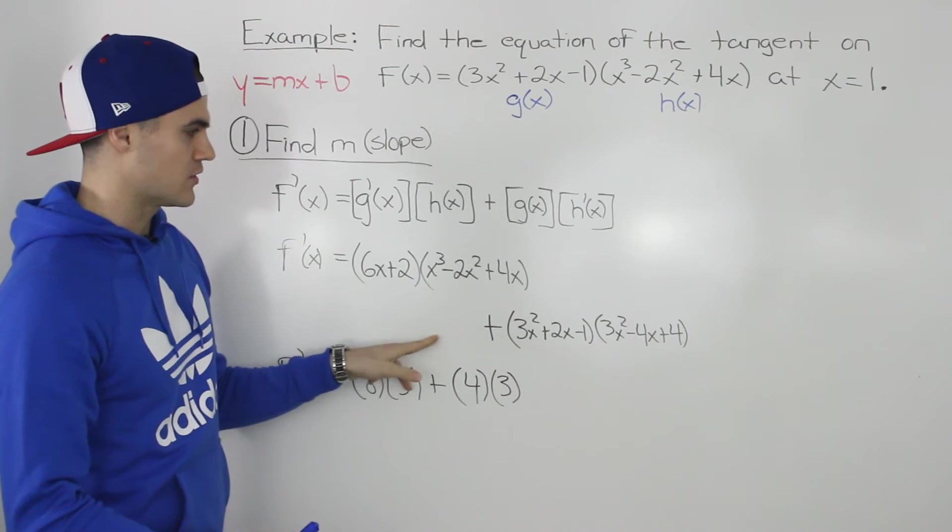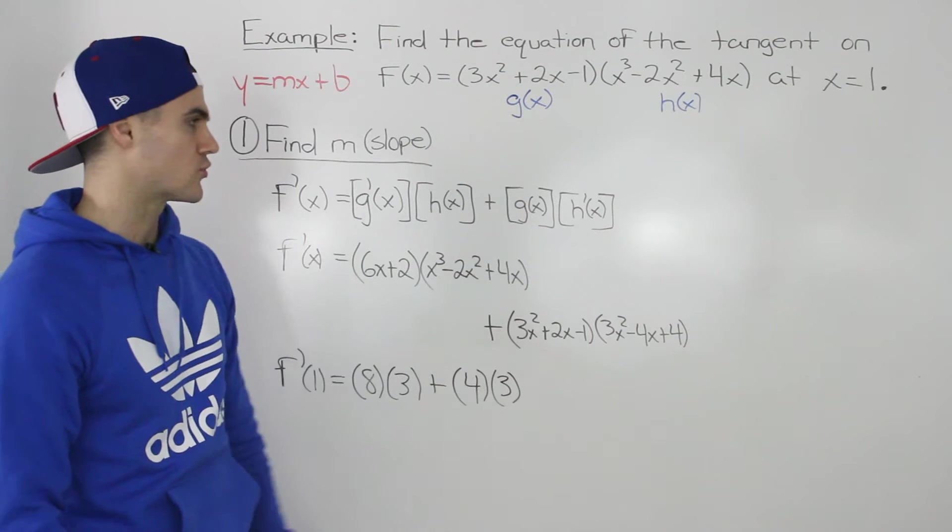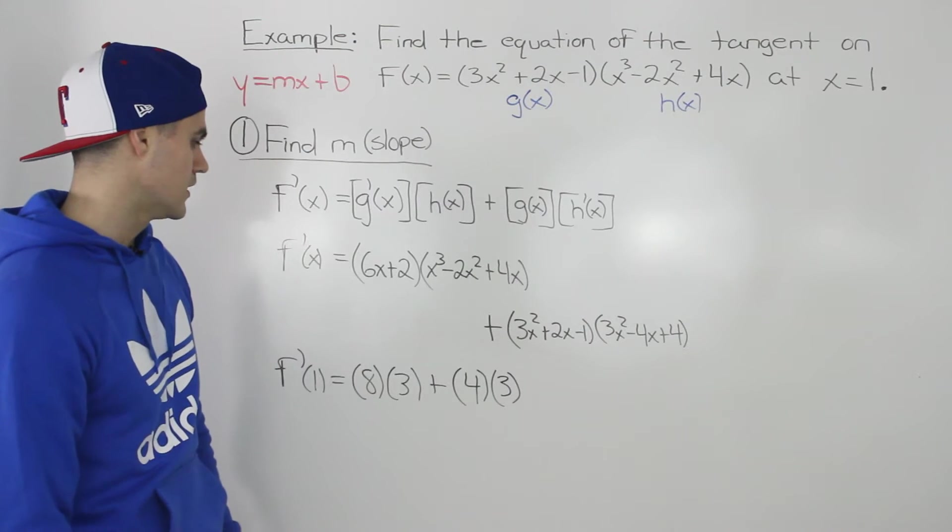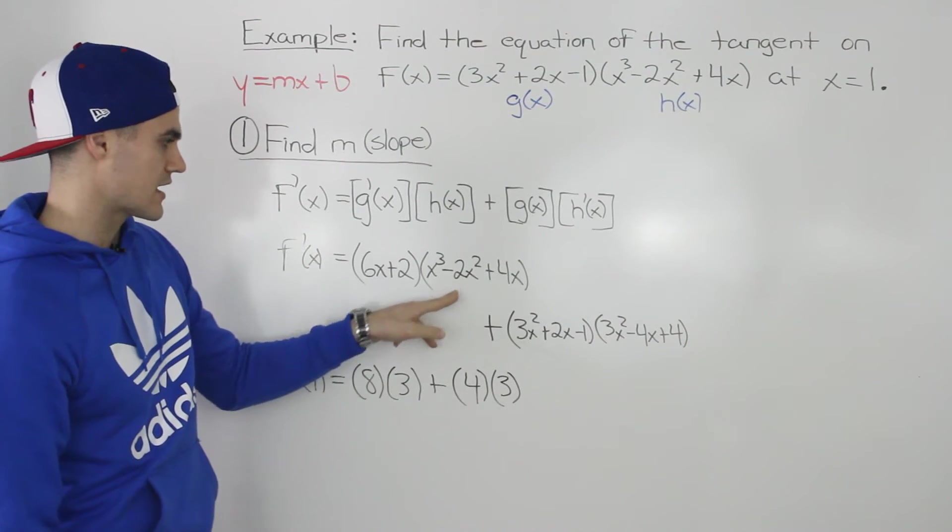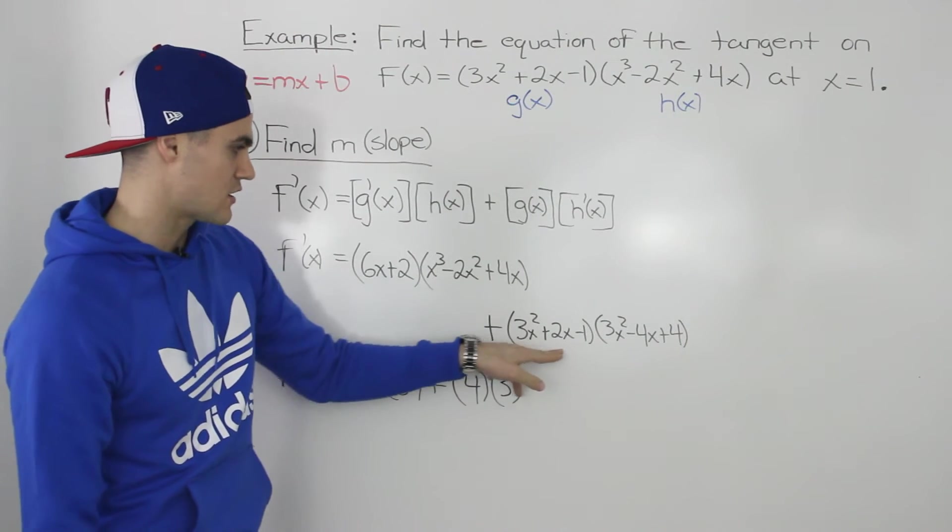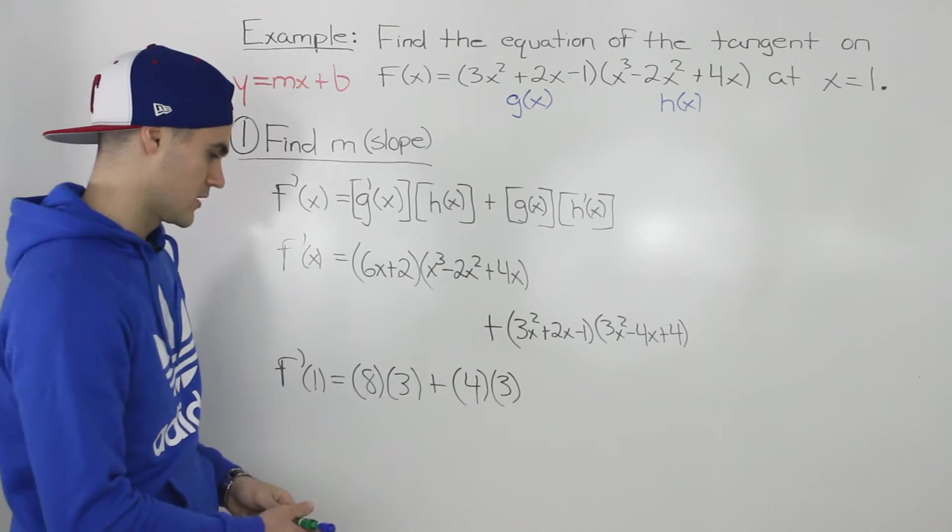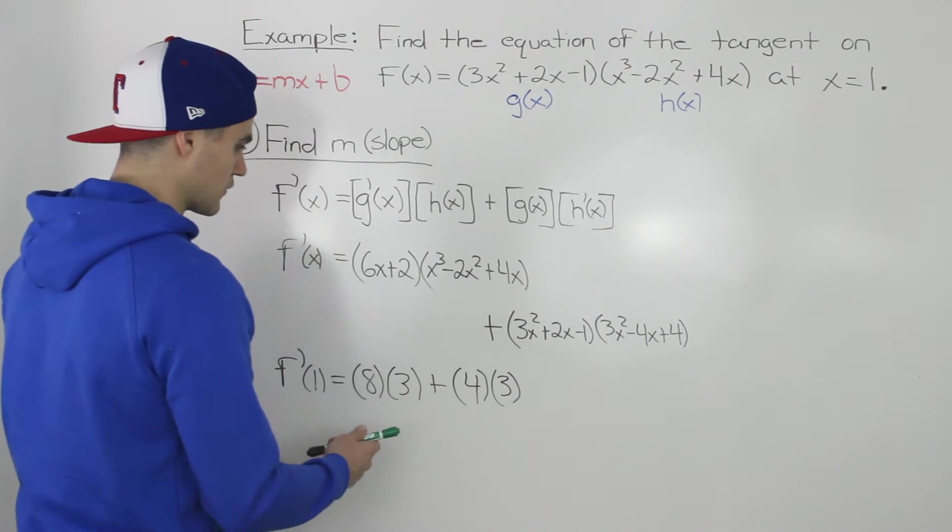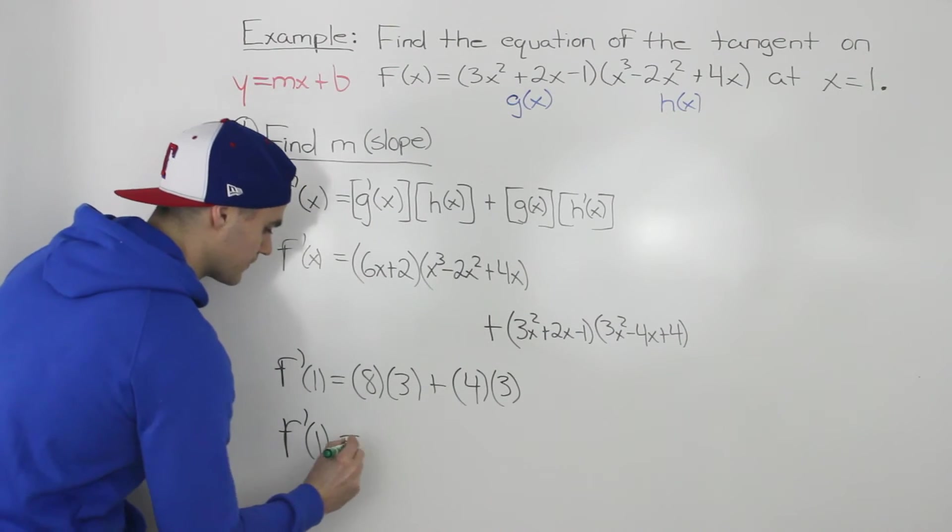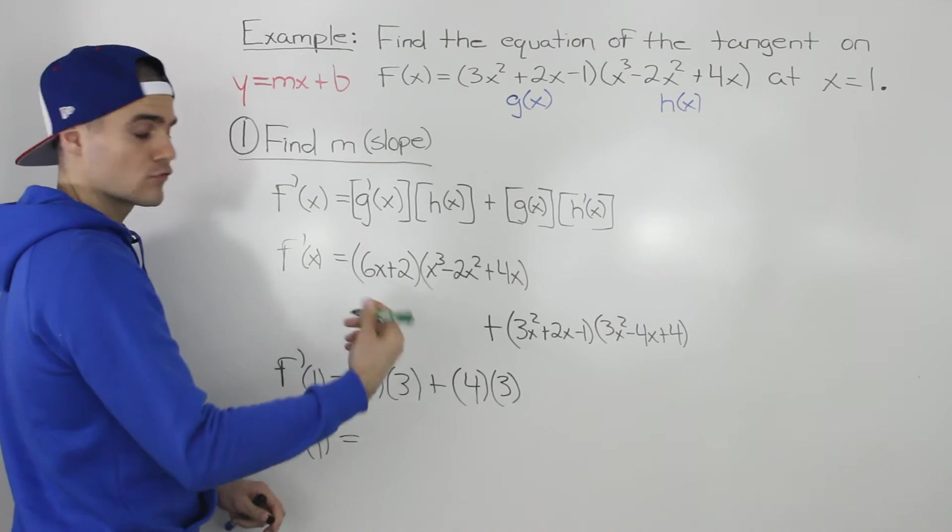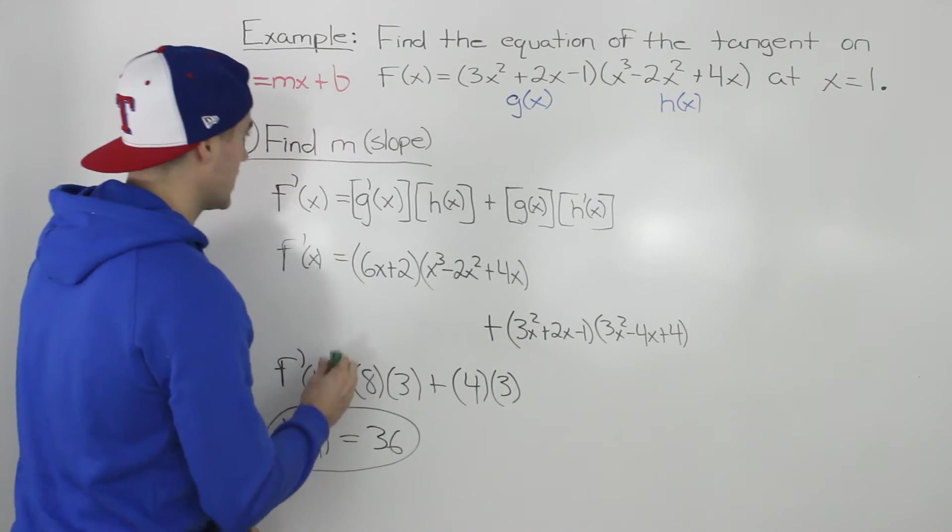So plugging that x value of 1 in for this derivative, I took this second portion and put it down here just to give myself more room. Plugging in an x value of 1, this first bracket would be 8, this second bracket would be 3, plus this first bracket here would be 4, and then this second bracket would be 3. So 8 times 3 is 24 plus 12. We know that the slope of the tangent at x equals 1 is equal to 36.